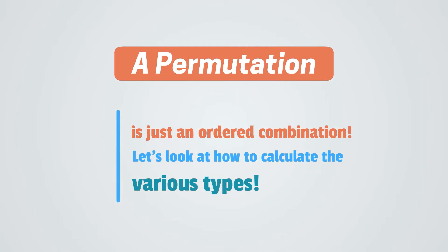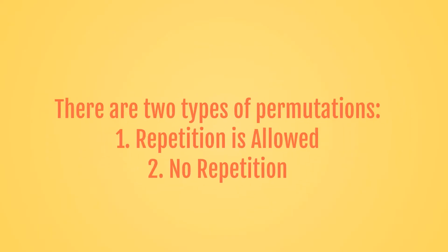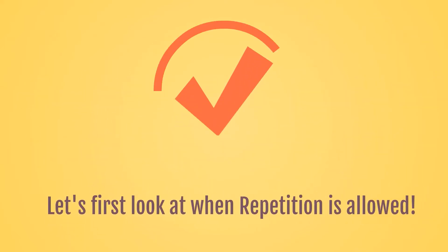Let's look at how to calculate the various types of permutations. There are two types of permutations. The first type is when repetition is allowed, and the second type is when there is no repetition allowed. Let's first look at when repetition is allowed.